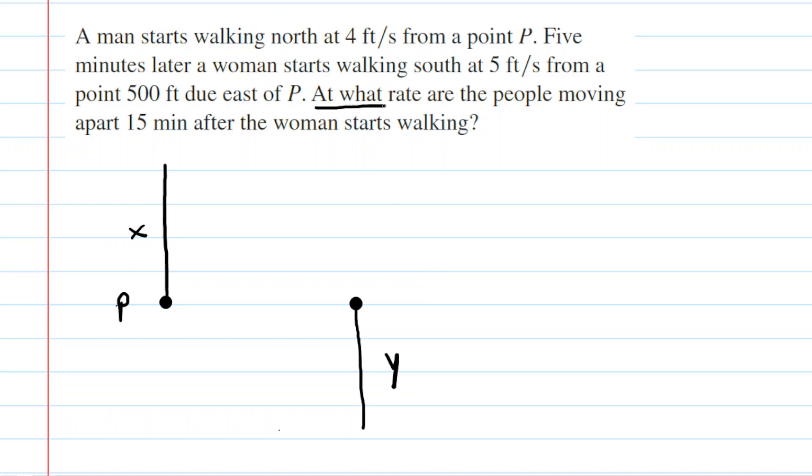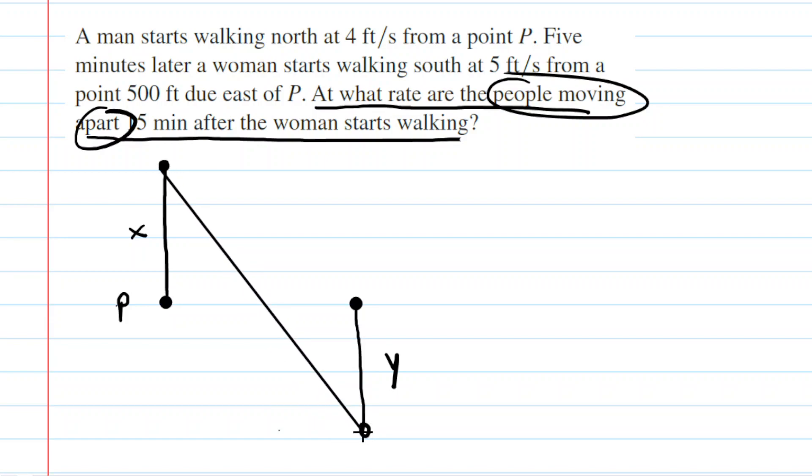We're going to label that distance as Y for now. And the question says, at what rate are the people moving apart 15 minutes after the woman starts walking? Now, this phrase, people moving apart, indicates a distance between the people. So if we take this point where the man is standing and this point where the woman is walking and we connect them with another line, that would be the distance between the people, and it's the rate of change in that distance that we are looking for.